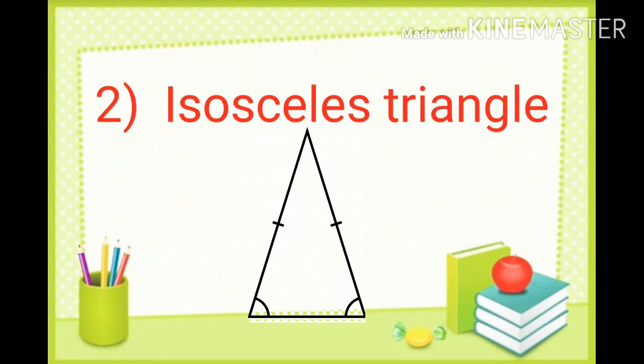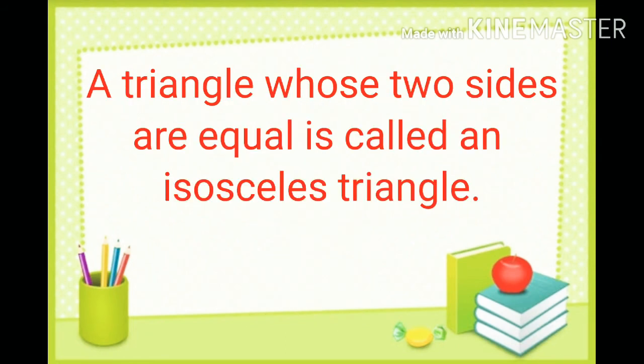The second type is an isosceles triangle, which means a triangle whose two sides are equal is called an isosceles triangle.